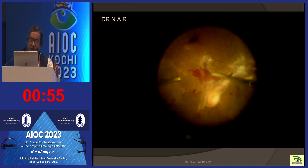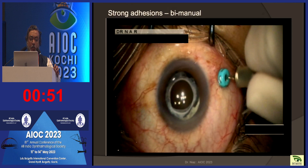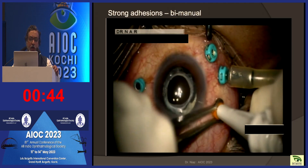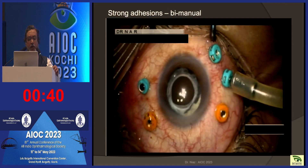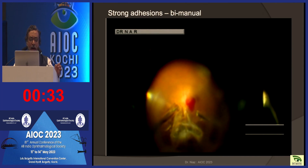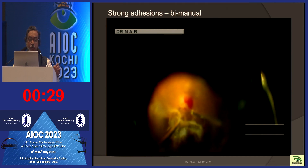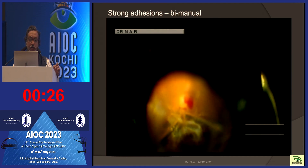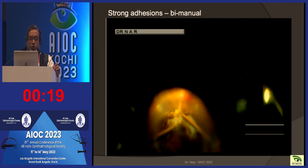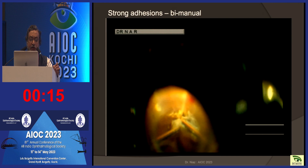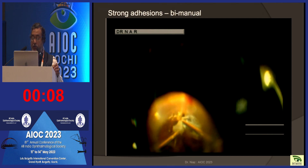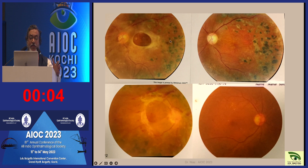With new instruments and updated vitrectomy machine parameters, surgery has become much easier than 20 years ago. When adhesions are very strong and a standard approach risks retinal injury, bimanual surgery is planned pre-operatively. Two chandelier lights are placed; one hand holds a forceps to lift the retina, the other operates the cutter to release traction underneath. This technique safely manages very strong adhesions.